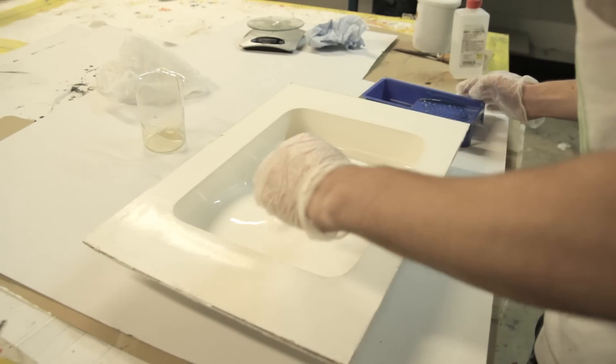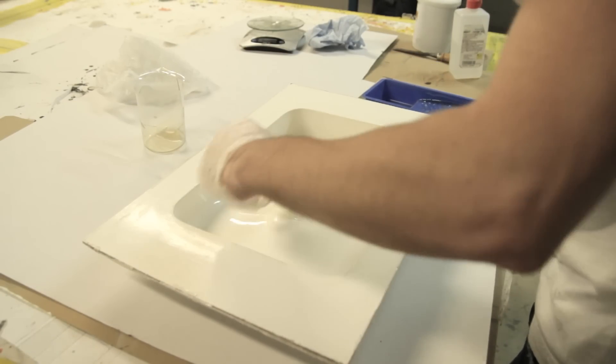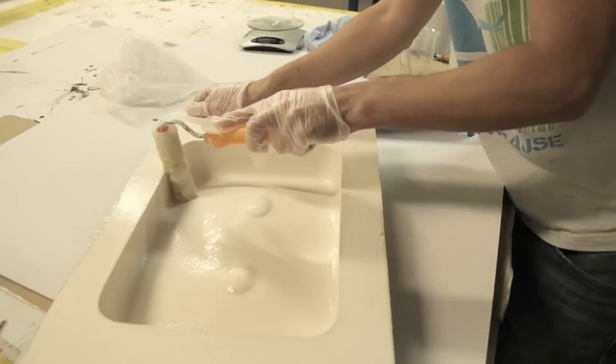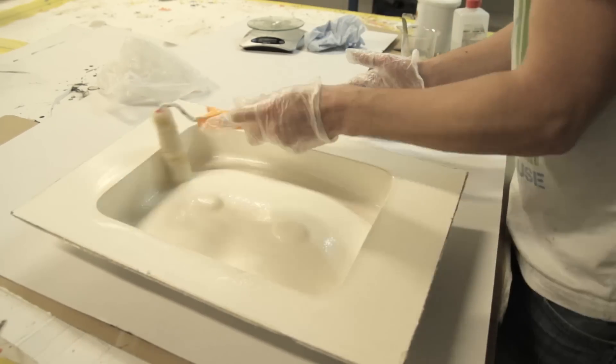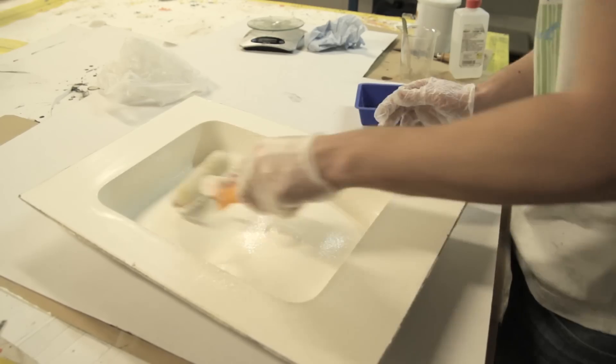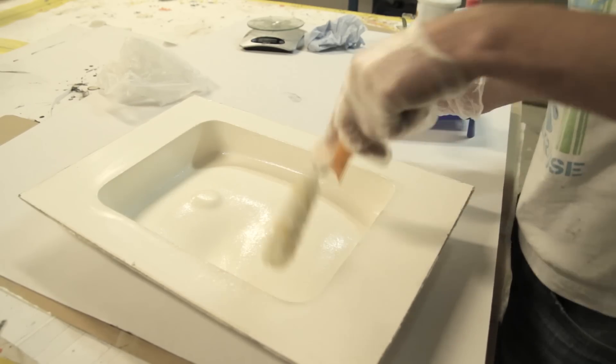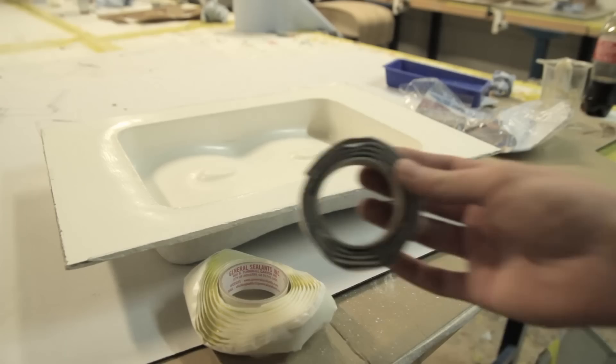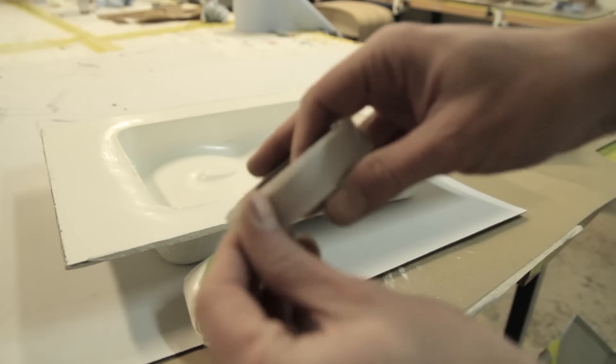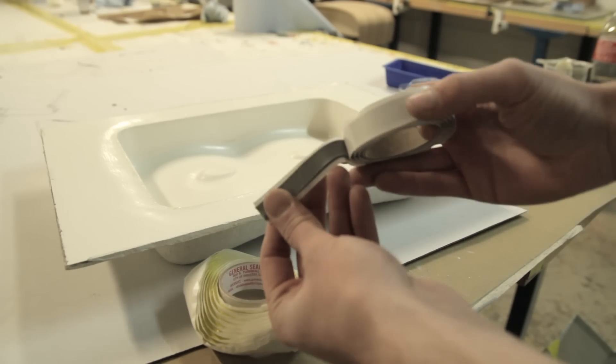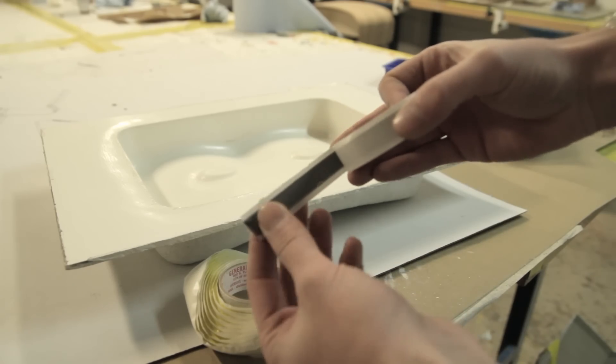You just add some MEKP hardener, just like you would do with polyester. The cool thing is it's very runny and very easy to apply. It might be better to apply it with a gelcoat spray gun. This is the result you get - a bit of orange peel, but the surface on the side of the mold is most important, so if everything is covered that's the most important thing.